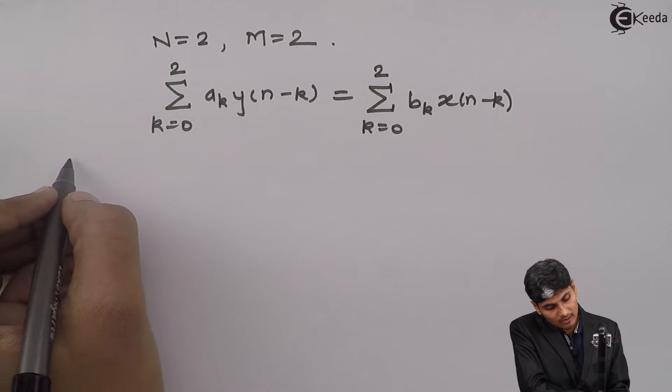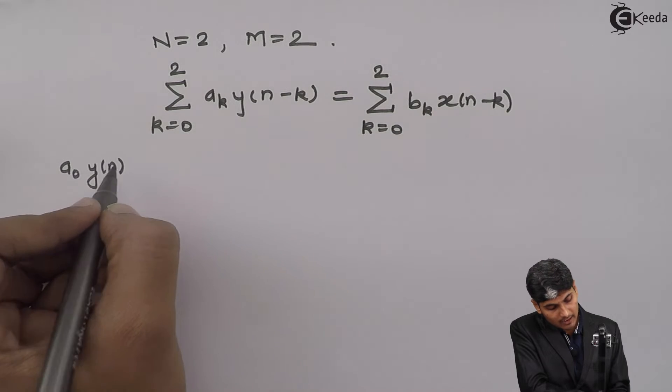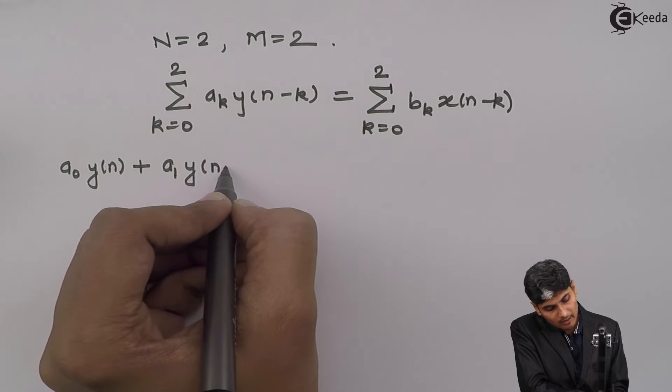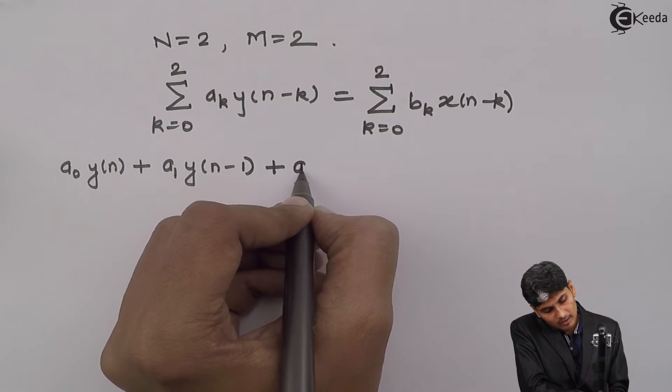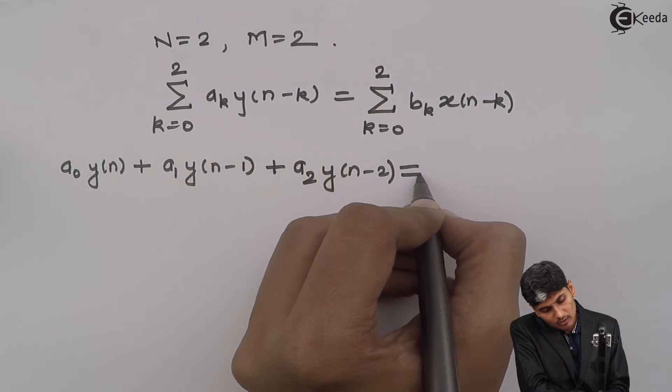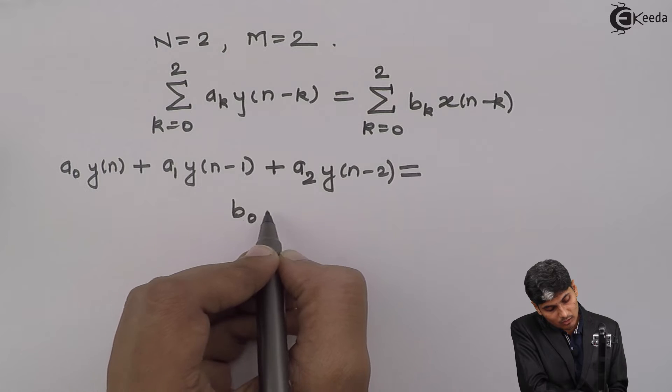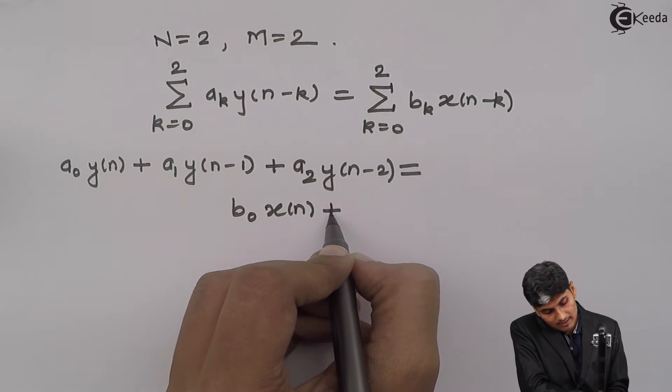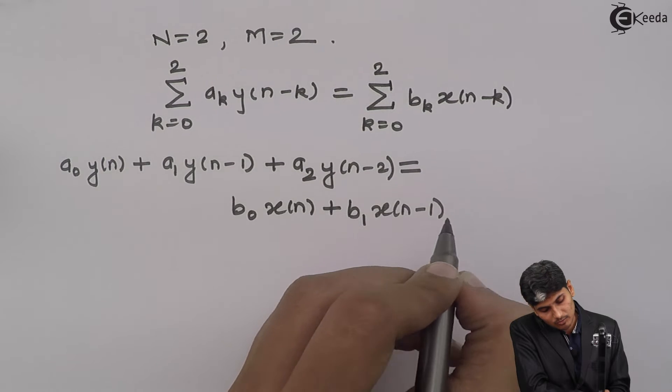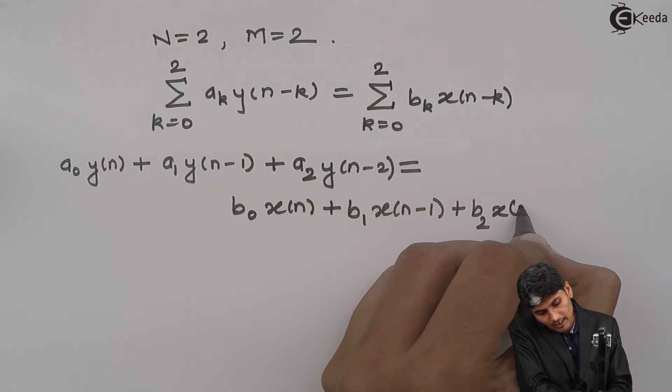Then, putting the value of k will lead to a_0 y(n) plus a_1 y(n-1) plus a_2 y(n-2) equals to b_0 x(n) plus b_1 x(n-1) plus b_2 x(n-2).